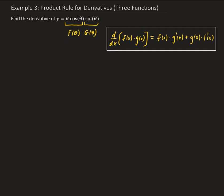So let's go ahead and apply the product rule. We're going to have y prime — which is the derivative of y with respect to θ — equal to F of θ times G prime of θ plus G of θ times F prime of θ.